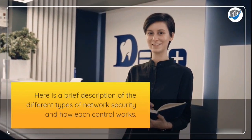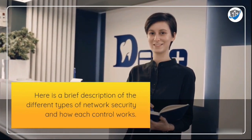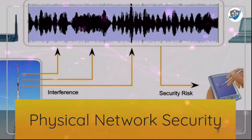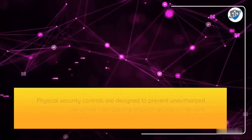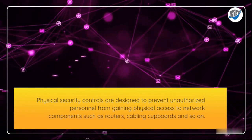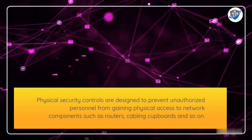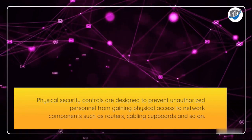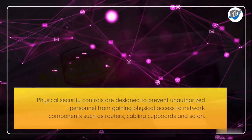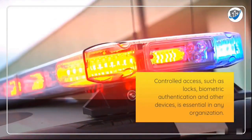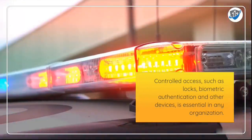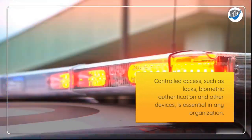Physical network security controls are designed to prevent unauthorized personnel from gaining physical access to network components such as routers, cabling cupboards, and so on. Controlled access such as locks, biometric authentication, and other devices is essential in any organization.